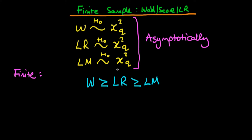Because we compare each of these test statistics to the same chi-squared distribution with q degrees of freedom, we can say something about the relative chances of rejecting a null hypothesis in each of these different tests. If we reject the null hypothesis on the basis of the LM statistic, then because the LR statistic is always greater than or equal to the LM statistic, we will also always reject the null hypothesis under the LR statistic. And similarly, because the Wald is always greater than or equal to the likelihood ratio statistic, we will always reject the null hypothesis under the Wald statistic if we reject it under the LR statistic, hence if we reject it under the LM statistic.